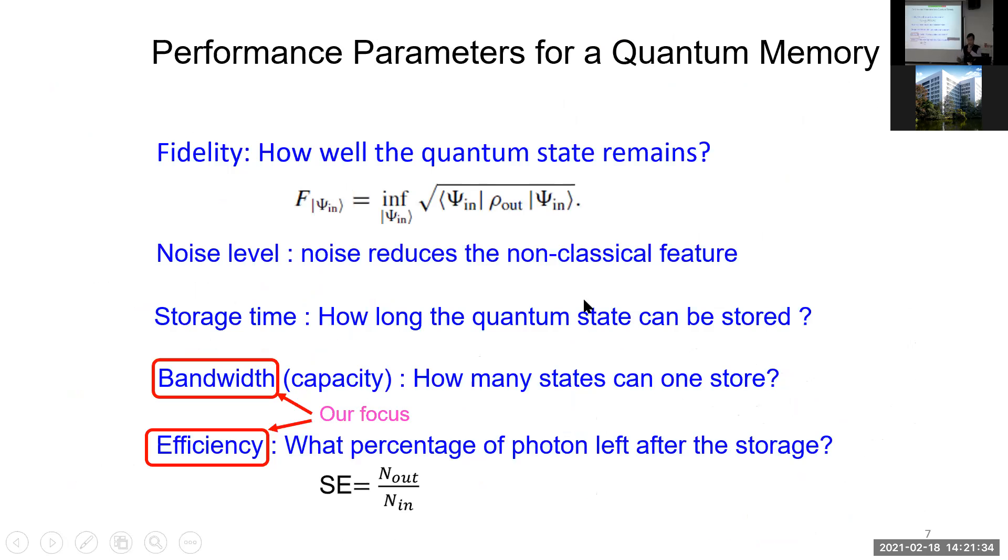Okay, so there are many performance parameters to evaluate quantum memory, such as fidelity. Basically it's a measure of how well the quantum state remains, or noise level, or storage time, or bandwidth, or efficiency. In my research we focus more on efficiency first, and then very soon we emphasize the bandwidth.